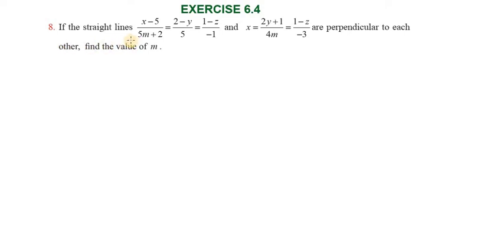Hi students, greetings from Sex Education Academics. This is Exercise 6.4, Question Number 8. If two straight lines given in Cartesian equation are perpendicular to each other, find the value of m.